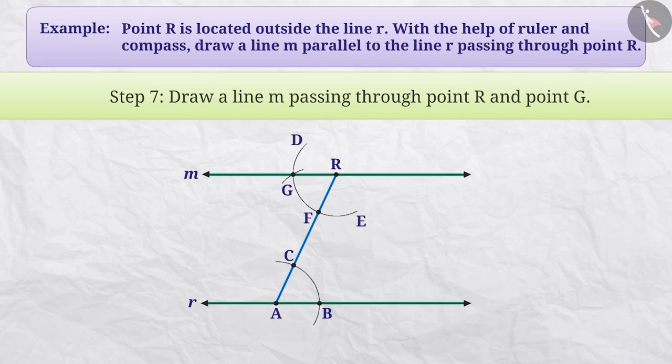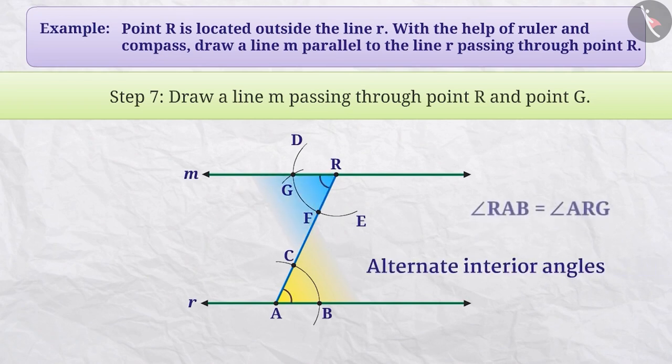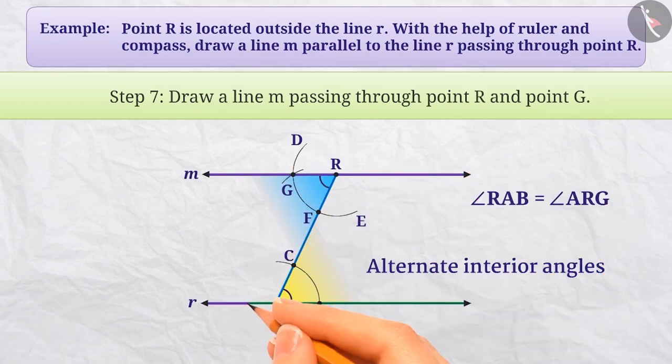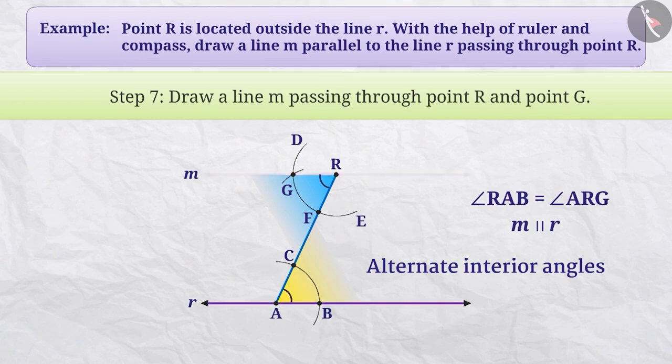Here, we observe that angle RAB and angle ARG are alternate interior angles and they are equal. Thus, line M and line R are parallel. In this way, we have obtained line M parallel to R and passing through the point R.